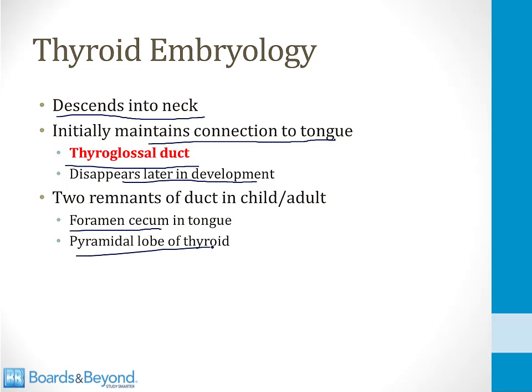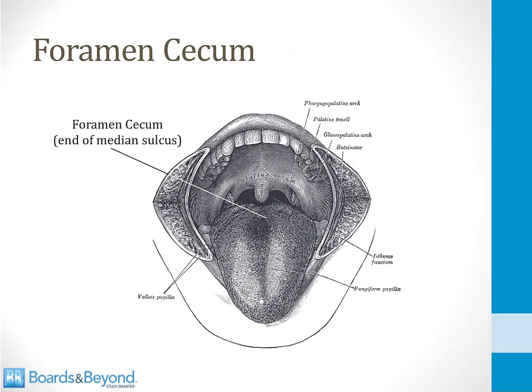The second remnant is the pyramidal lobe of the thyroid we saw before — when it remains behind, that is a remnant of the thyroglossal duct. Shown on screen is a drawing of the tongue with the median sulcus, and where it ends is the foramen cecum — a remnant of the thyroglossal duct marking where the thyroid began to form in the fetus and dove down into the neck to form the thyroid gland.